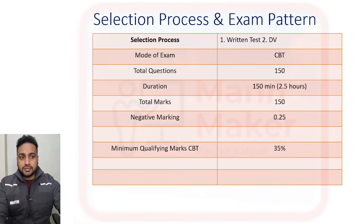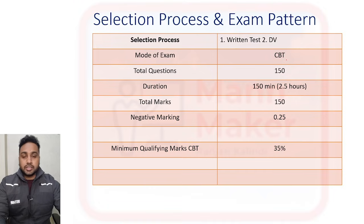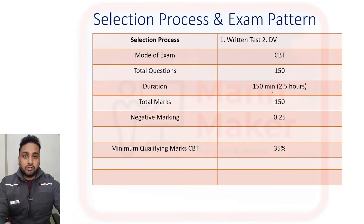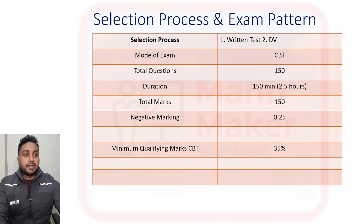In the instruction part they have mentioned the exam pattern. As I told you, there is a written test and document verification (DV). In the written test, CVT will conduct it. There will be a total of 150 questions, 150 minutes (2.5 hours), and 150 marks — one mark per question. For negative marking they will deduct 0.25 marks for a wrong answer.